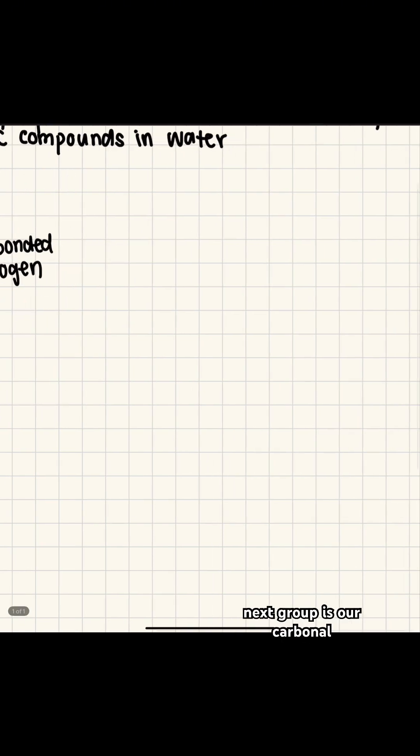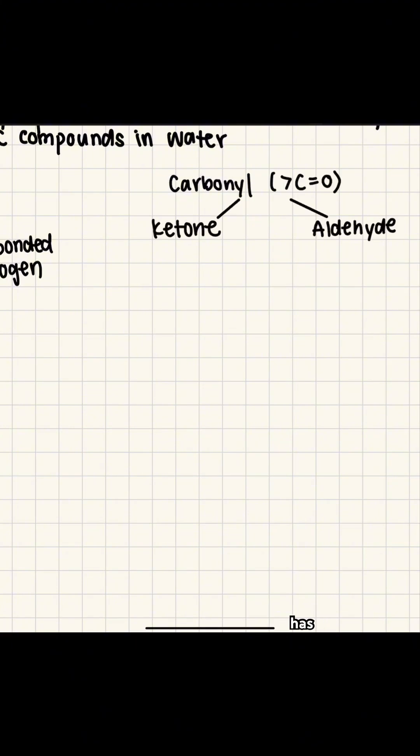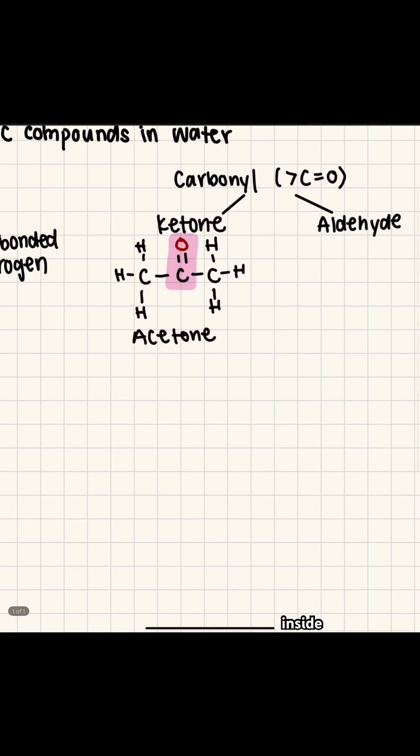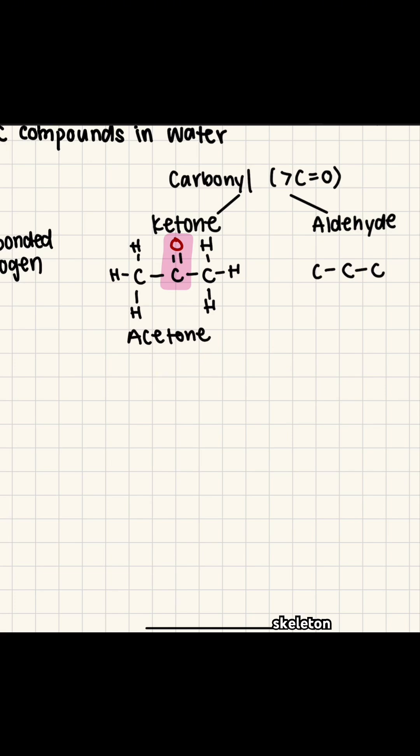The next group is our carbonyl group. It has two subsections. The first is a ketone, which we find inside the carbon skeleton. We also have aldehyde, found on the ends of the carbon skeleton. A carbonyl group is just a carbon double bonded to an oxygen.